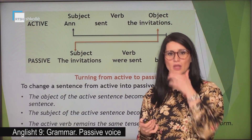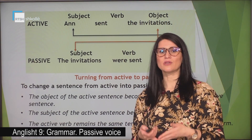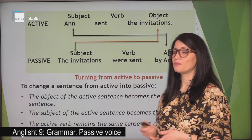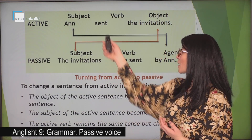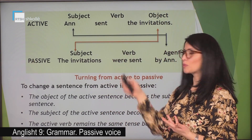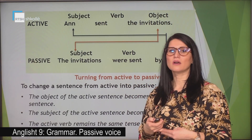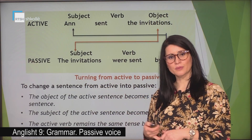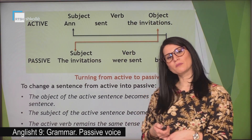What happens with the subject of the active sentence? It becomes the object of the passive sentence — we call it the adjunct. What happens with the verb? The active verb changes into a passive form by using the verb 'to be' plus the past participle of the verb. Be careful: the verb 'to be' should be in the same tense as the verb in the active sentence. For example, the word 'sent' here is in the past, so the verb 'to be' is in the past too. The verb 'to be' depends on the subject as well — if the subject is singular, the verb 'to be' should be singular; if the subject is plural, the verb 'to be' will be plural.